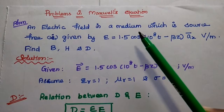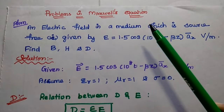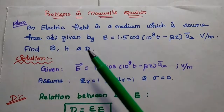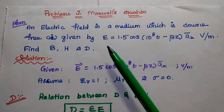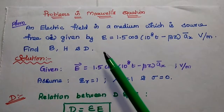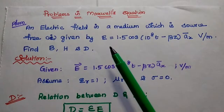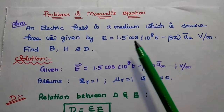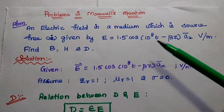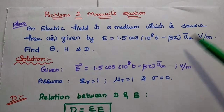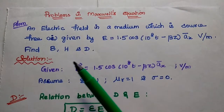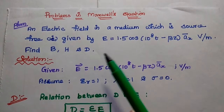Dear students, now we are going to solve one important problem in Maxwell's equation. An electric field in a medium which is source-free is given by E = 1.5 cos(10^8 t − β z) â_x volt per meter. Find B, H, and D.